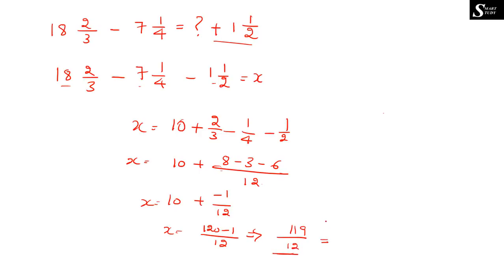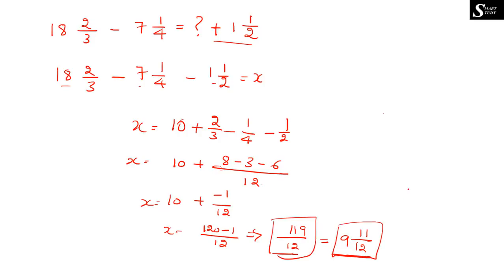Expressing 119/12 as a mixed fraction: 12 × 9 = 108, remainder 11. So the answer is either 119/12 or 9 and 11/12. I hope you understood.